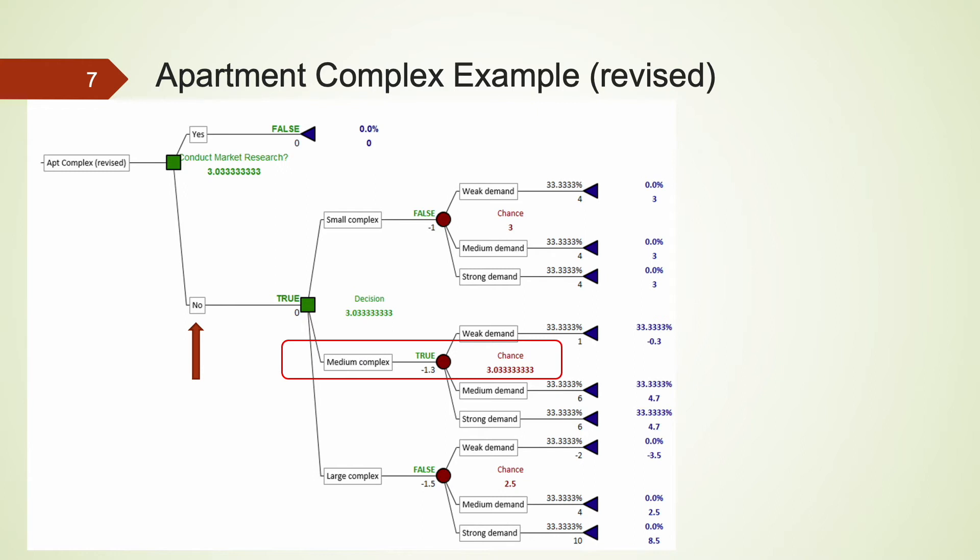If the company follows this path, then its expected payoff is $3.03 million when it builds a medium complex for the second decision. Can the company do any better if it conducts market research?